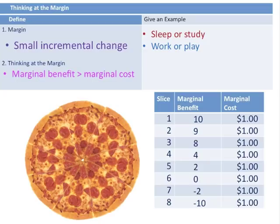Using a pizza with eight slices as an example, each slice represents a margin with both a marginal benefit and a marginal cost. I don't want to consume the pizza where the benefit is negative — based on these numbers, the seventh slice would probably be negative to me.